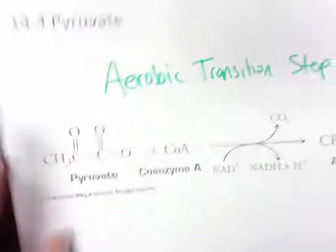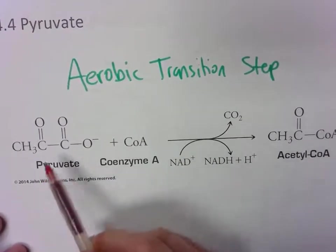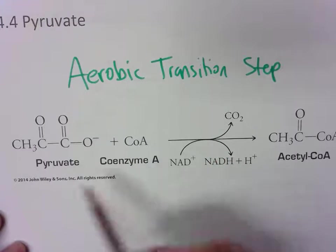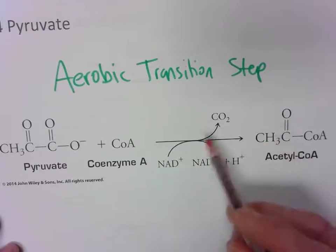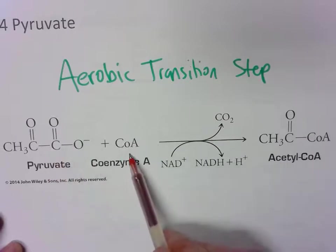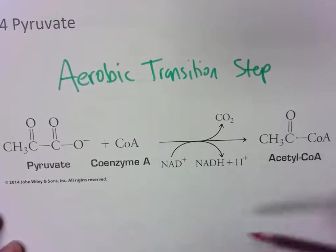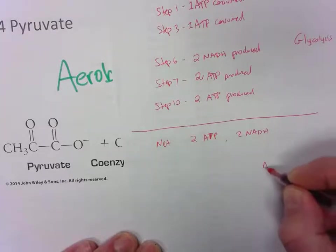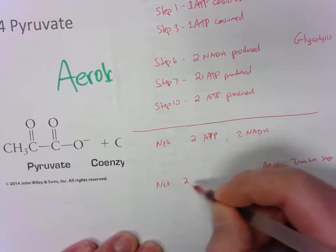In the next step, pyruvate then gets converted into acetyl-CoA. So it'll be the aerobic transition step. Since we have two pyruvates, this is going to happen twice. Pyruvate will combine with coenzyme A. And pyruvate gets oxidized. It gets oxidized to form acetyl-CoA and releases CO2. NAD plus is getting reduced. So our reactants are pyruvate and coenzyme A and NAD plus. Our products are CO2, NADH, and acetyl-CoA. So at the end of this step, we end up getting two additional NADHs. So this would be the aerobic transition step. And we net two NADHs here.